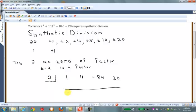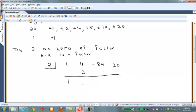We start by bringing down the 1 and multiplying that by 2. Then when we multiply by 2, we'll add that to the 11 and get a 13. Multiply this by 2, the 13 by 2, and we get a 26. 26 and negative 84 is, I believe, 58. Let me double check, though.